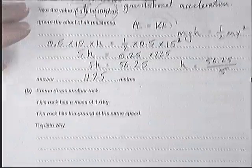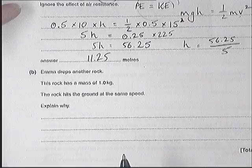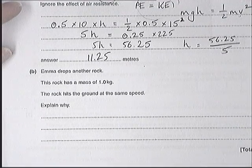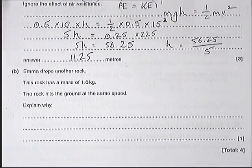Emma drops another rock. This rock has a mass of a kilogram, so it's twice the mass, and they hit the ground at the same speed. Well why is this? Most people said that the gravity force is the same, the gravitational pull is the same.